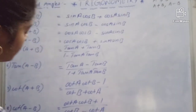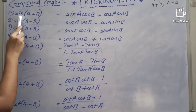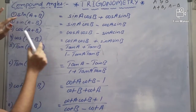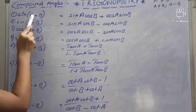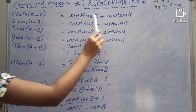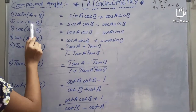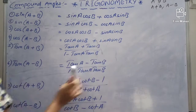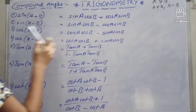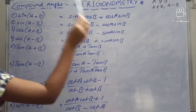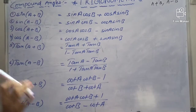See here: for sin A plus B, it is sin cos — the sign is the same, plus. For sin A minus B, sin cos — the sign is minus. But for cos, the sign changes: cos A plus B has a minus, and cos A minus B has a plus.